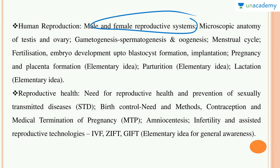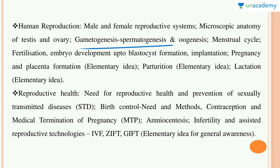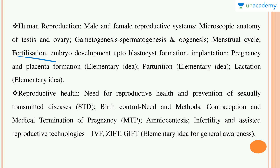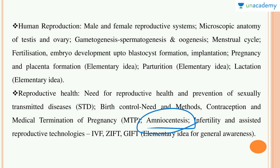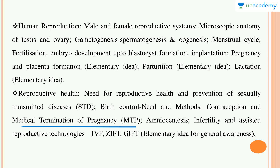Then gametogenesis — spermatogenesis and oogenesis — the menstrual cycle (very very important), fertilization, embryo development up to blastocyst formation, implantation, pregnancy and placenta formation, parturition, and lactation. For reproductive health: the need for reproductive health, prevention of sexually transmitted diseases, amniocentesis, contraception, medical termination of pregnancy, and current updates like IVF and GIFT.